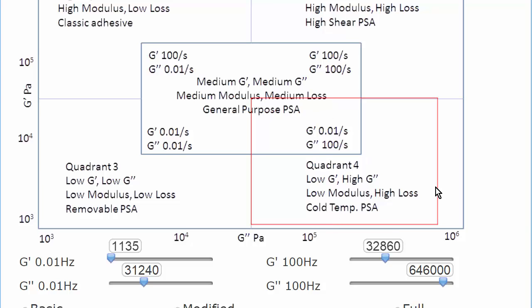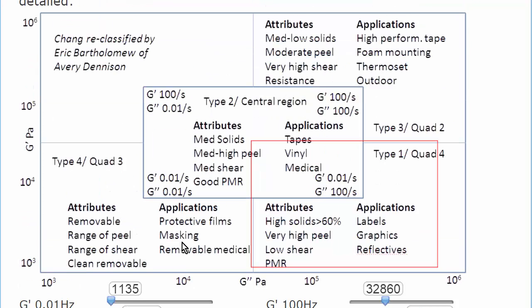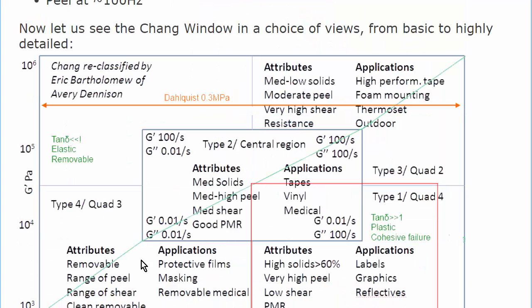We can look at the same Chang window in other ways. This is the Bartholomew version of the Chang window, where you've got different applications attributes, and also you can have the full-on version, which includes this line, which is tan delta equals 1. So here we have elastic, here we have plastic, this is more cohesive, so these are the softer ones, these are the harder ones. And here's the Dahlquist 0.3 megapascals, so up here we have real adhesives, not PSAs, and those things which are dealing with high temperatures and outdoor or tough things have to be up in this region.